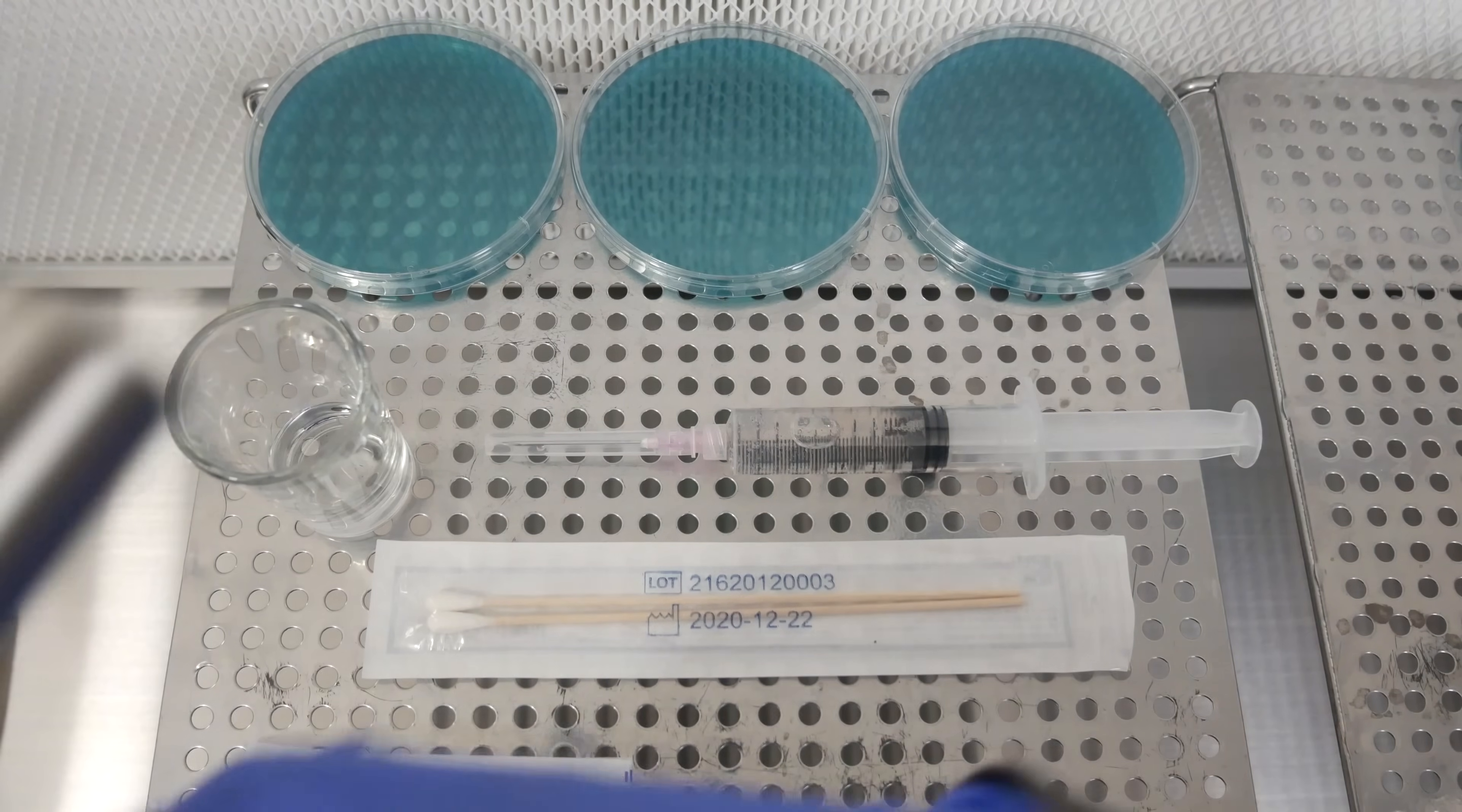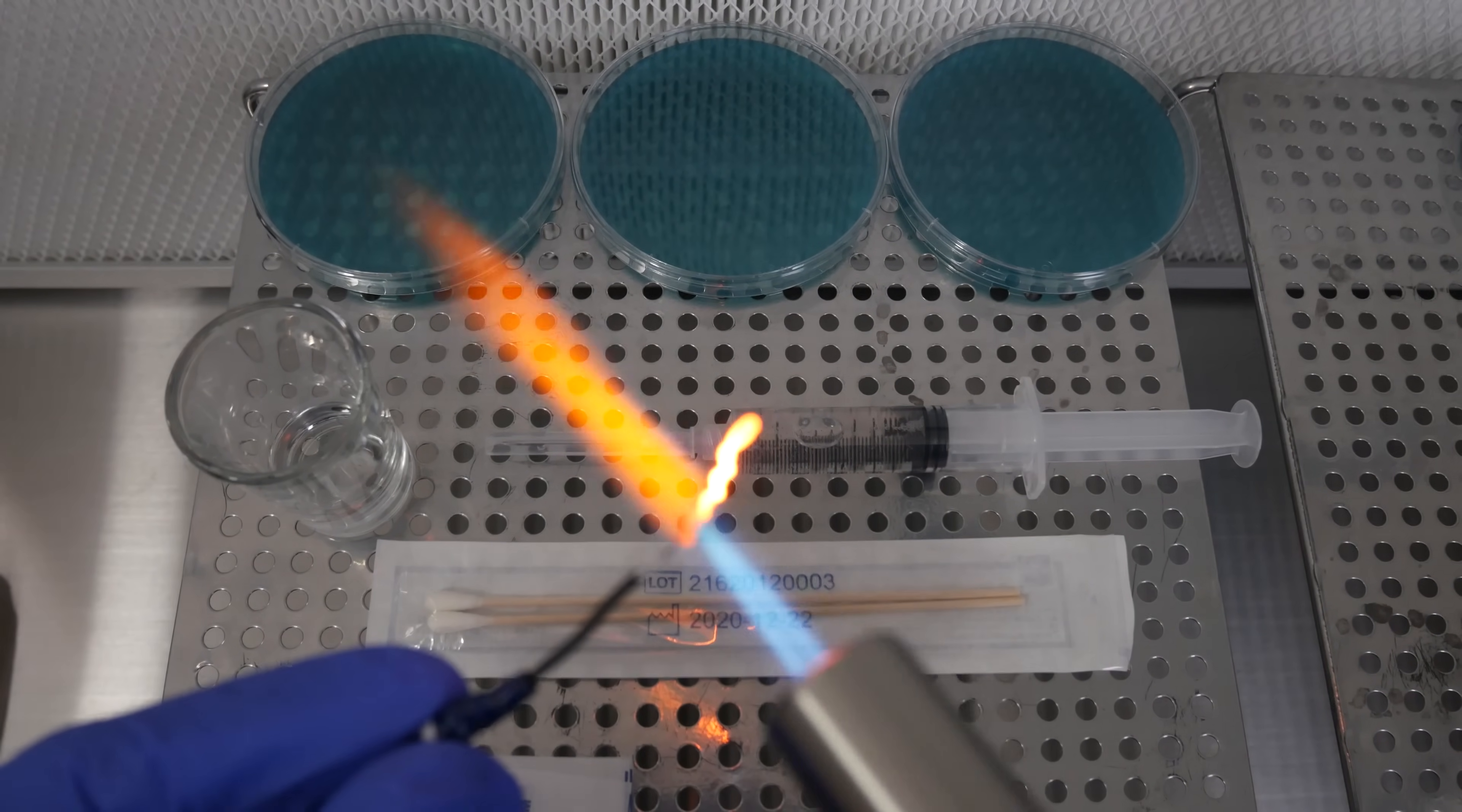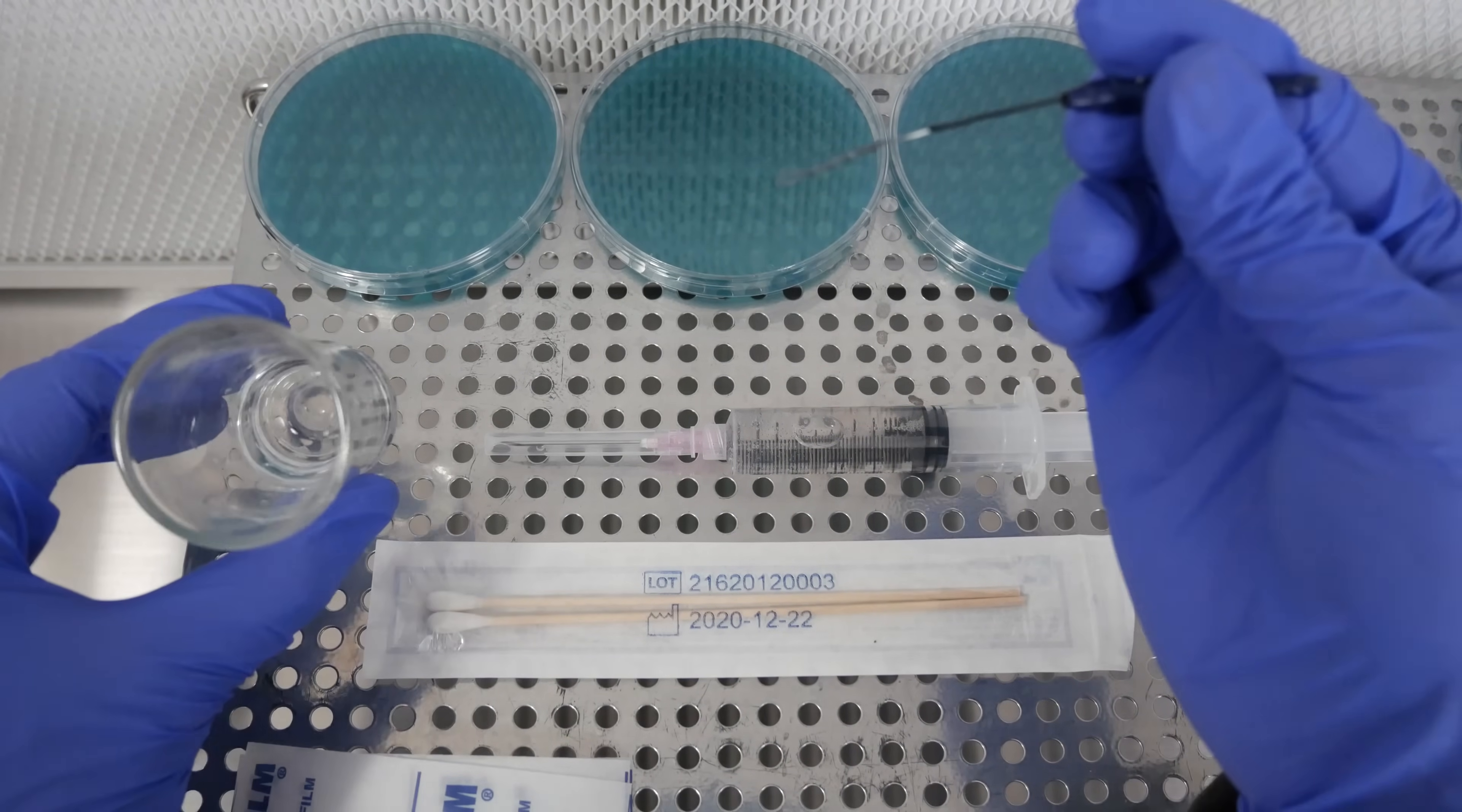The next method we'll use the inoculation loop here. What I'm going to do is flame sterilize the inoculation loop. This makes sure that any bacteria that might be on the loop is gonna be toasted. After I flame sterilize it, I'm gonna let it cool down for a few seconds here.